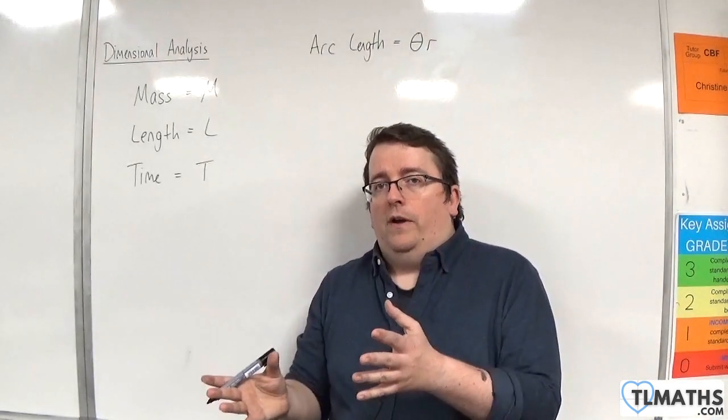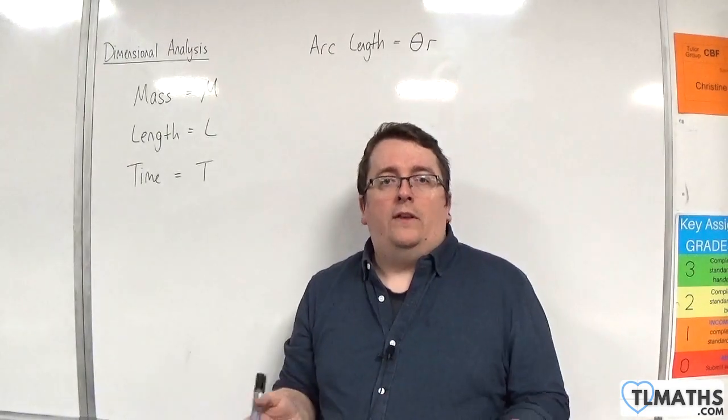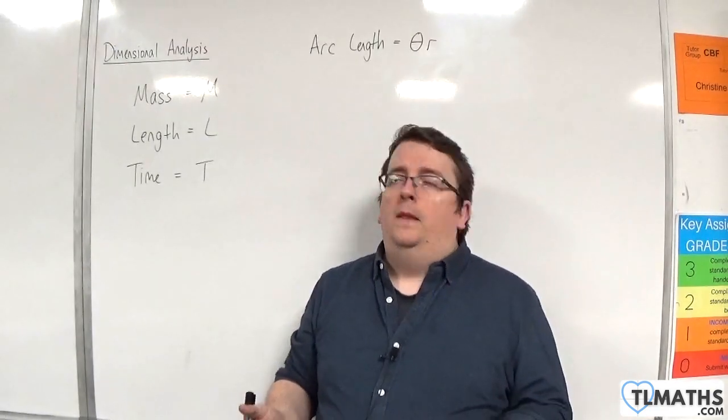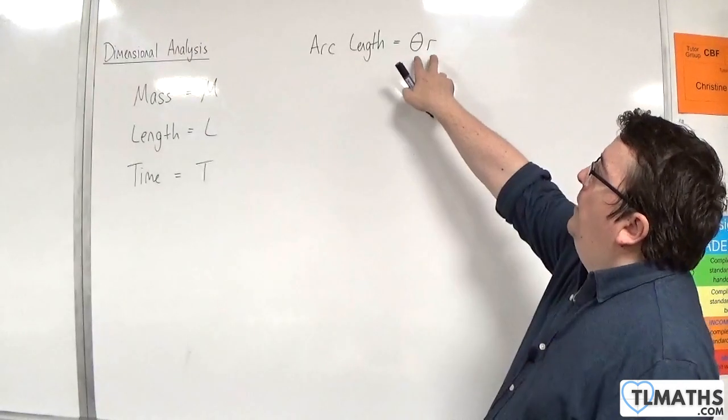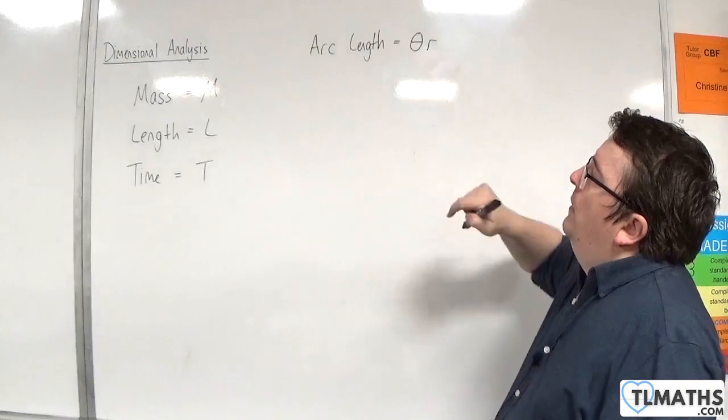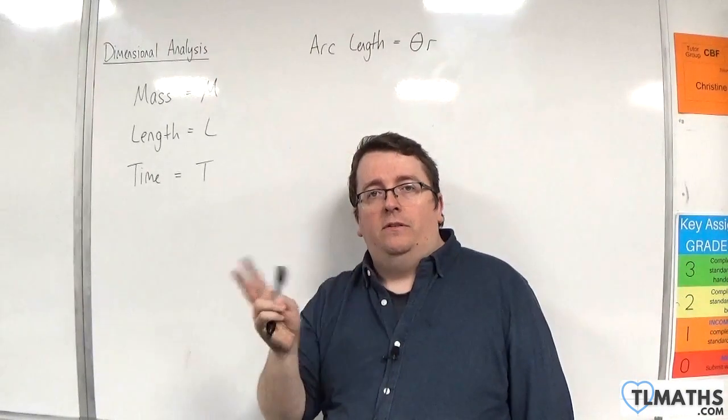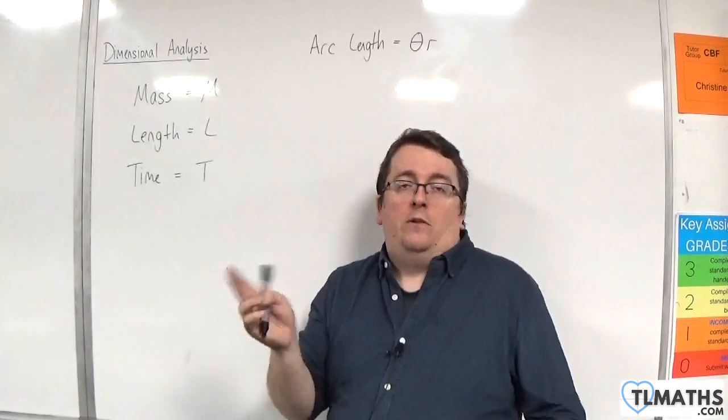Now, we know that arc length has to be just a length. It's not an area, it's not a volume. And we're multiplying two things together here, theta and r. But we can't be multiplying two things that represent lengths, because otherwise, as I said, we would get an area.